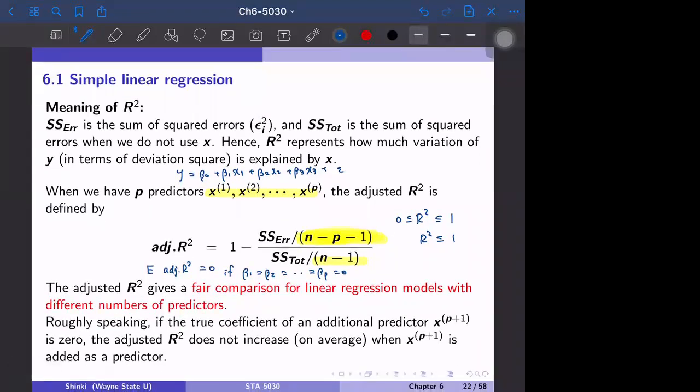So this is the definition and explanation of R-square. And R-square is named R-square because actually the R corresponds to the correlation between X and Y.